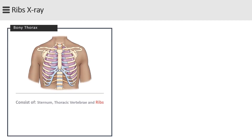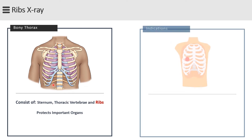Let's begin with the term bony thorax, which consists of sternum, thoracic vertebra, and 12 pairs of ribs connecting them together. The bony thorax protects important organs of the respiratory system, heart, and great vessels. The most common indication for ribs x-rays is broken ribs, which may cause pneumothorax, hemothorax, or pulmonary contusion.